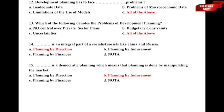Question 15: Dash is a democratic planning, which means planning is done by manipulating the markets — whether it is a) planning by direction, b) planning by inducement, c) planning by finances, or d) none of the above. The correct answer is option b) planning by inducement.